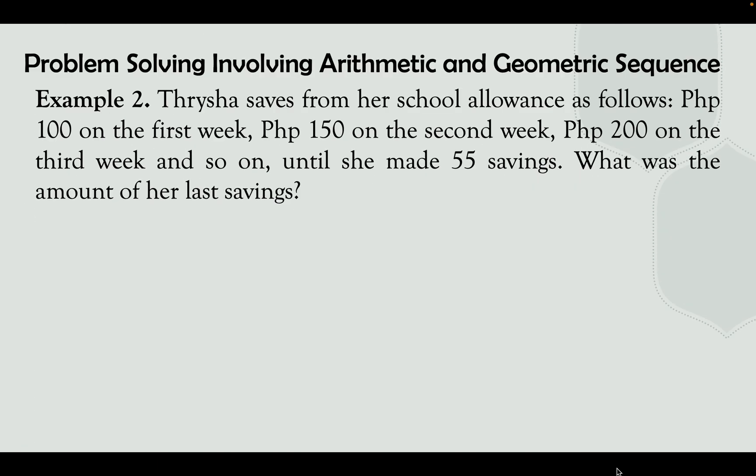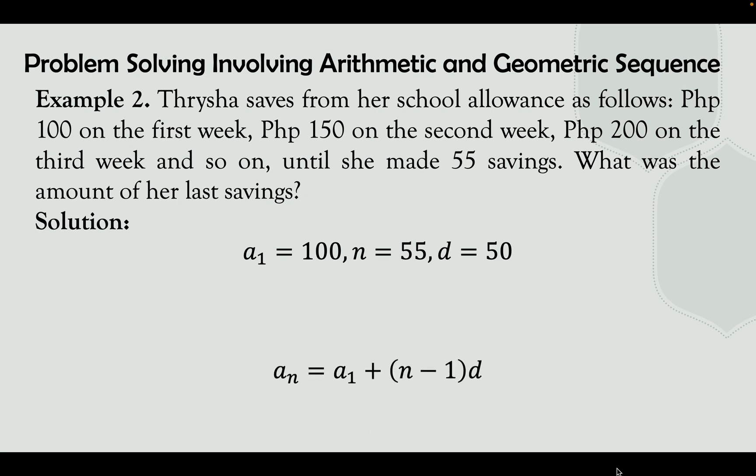Example number 2: Trisha saves from her school allowance as follows — in the first week she saved 100 pesos, on the second week 150 pesos, and on the third week 200 pesos, and so on, until she made 55 savings. What was the amount of her last savings? The given sequence is 100, 150, 200. The first term a sub 1 is 100, and the common difference is 50.